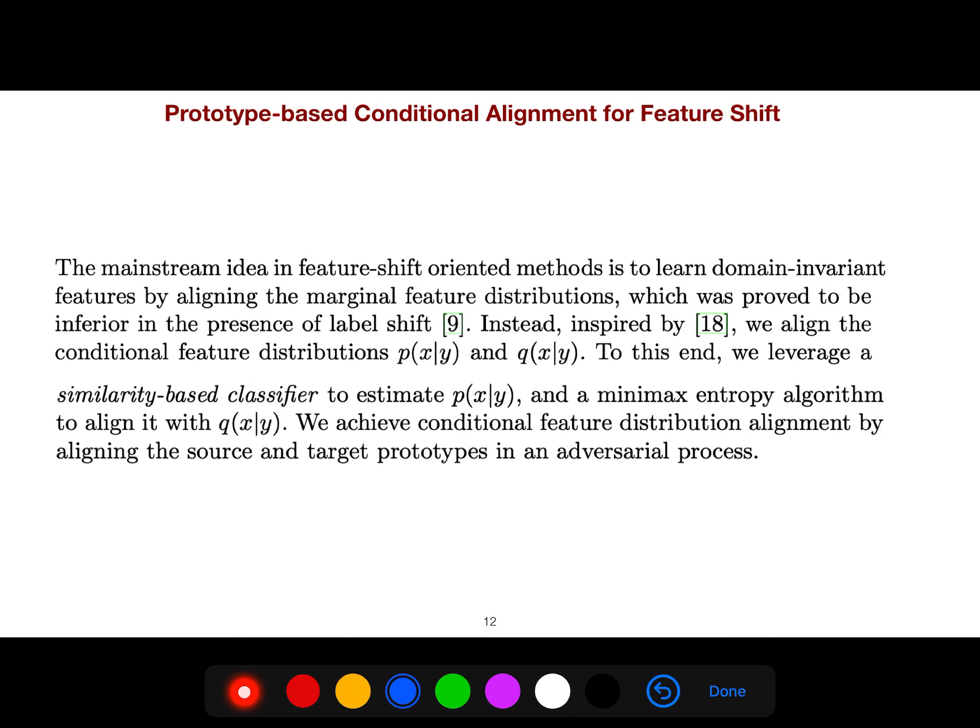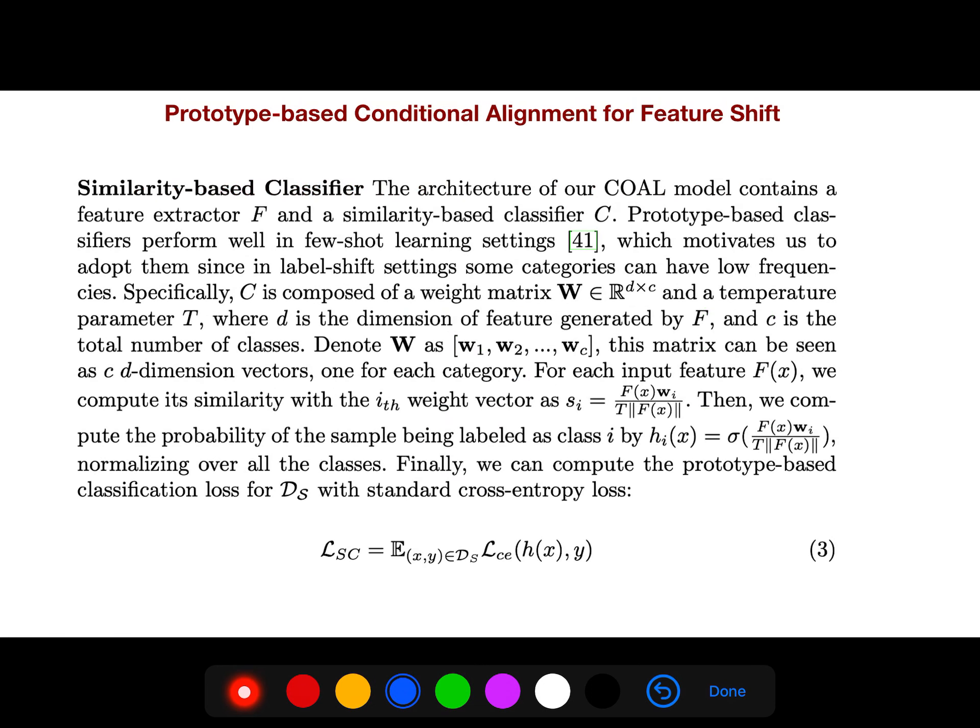So we leverage a similarity-based classifier to estimate probability of p(x|y) and a minimax entropy algorithm to align it with Q. And the architecture of COAL model contains a feature extractor and a similarity-based classifier C. Prototype-based classifiers perform well in a few-shot learning setting, which motivates us to adopt them since in label-shift setting, some categories can have low frequencies. So C is composed of a weight matrix and a temperature, where D is a dimension of feature generated by F, and C is a total number of classes.